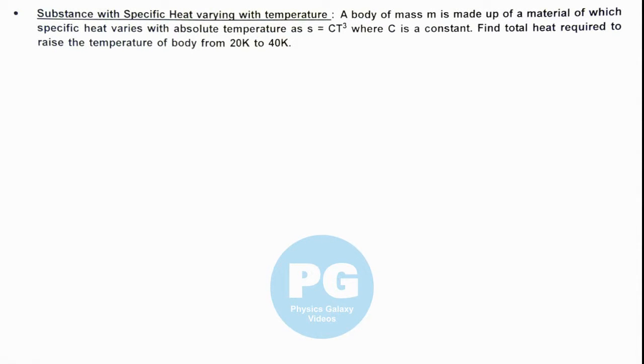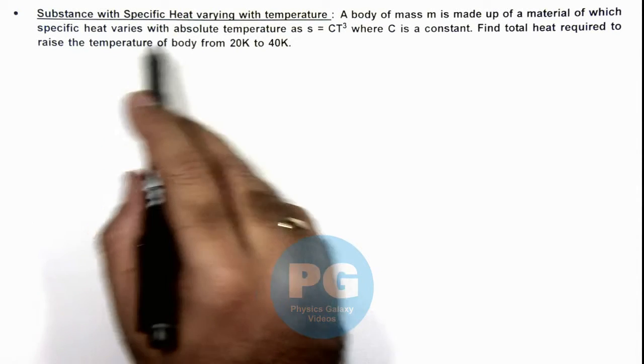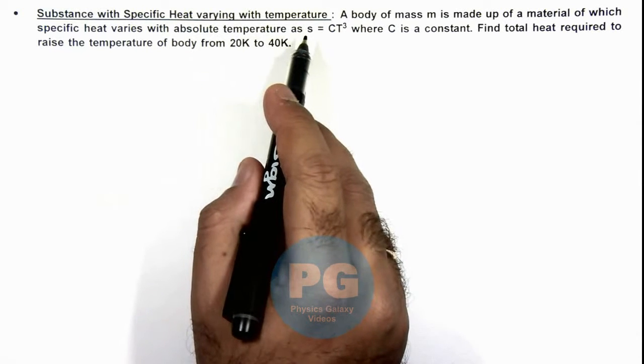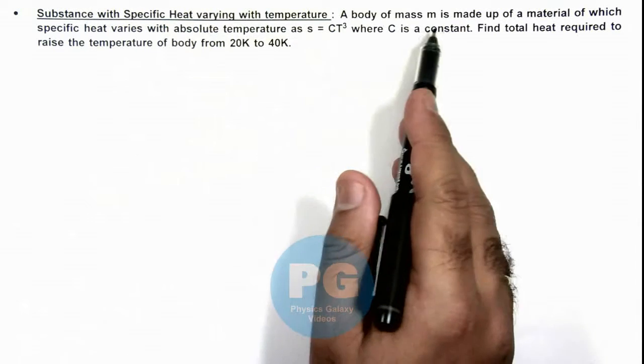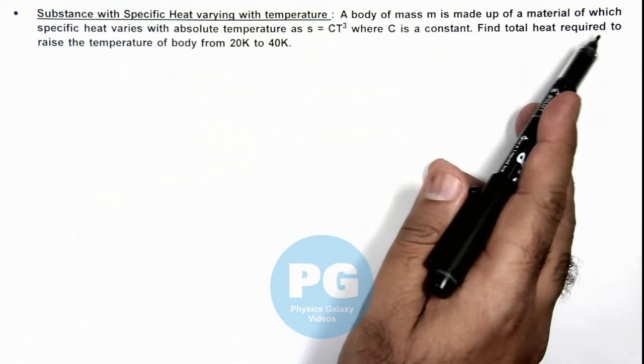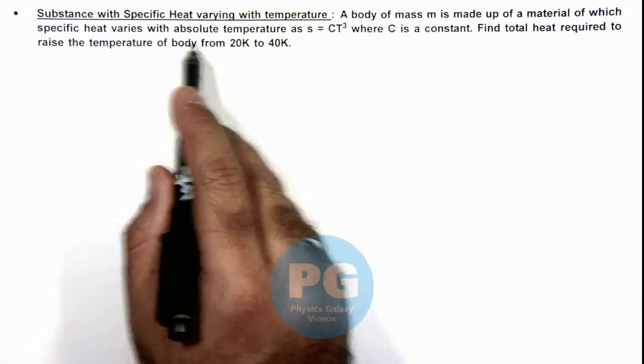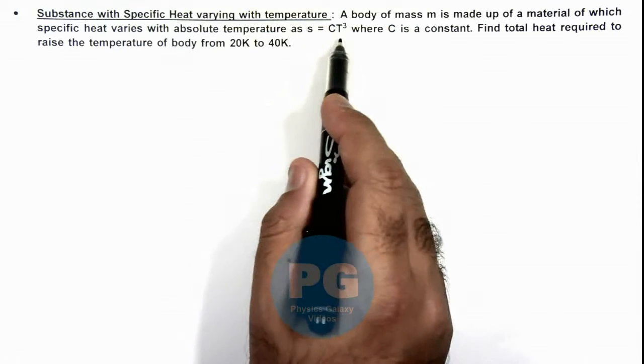In this illustration we'll analyze a substance with specific heat varying with temperature. We are given that a body of mass m is made up of a material of which specific heat varies with absolute temperature as s = cT³.